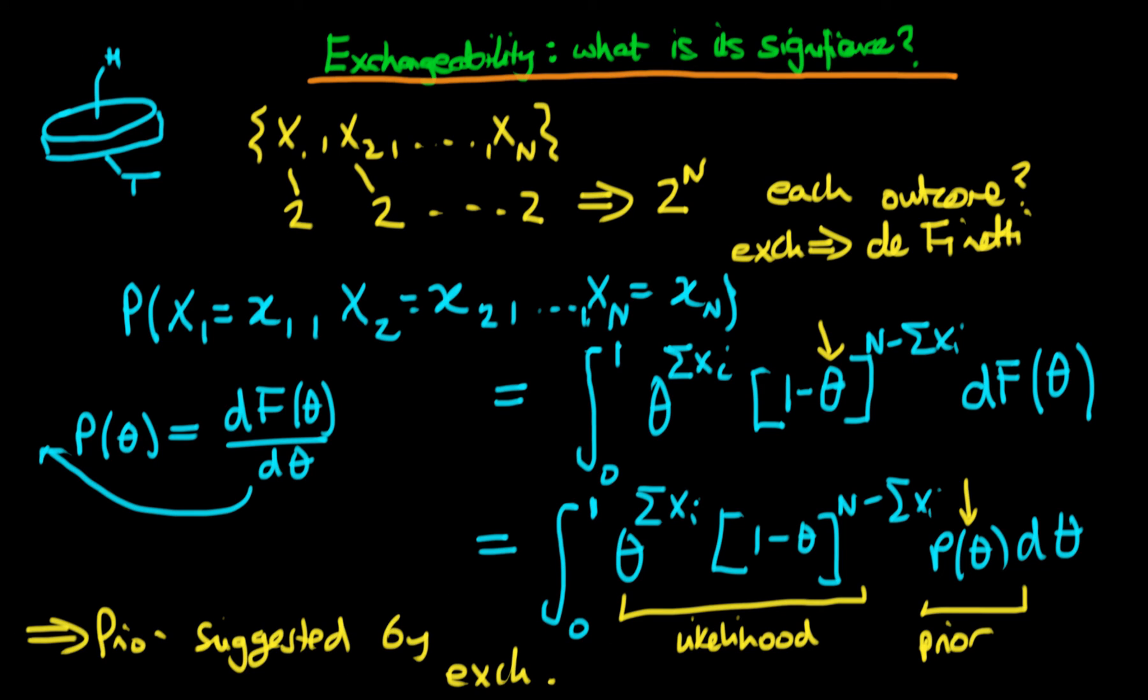Then essentially you're not really that happy with the concept of a sequence of data being exchangeable. That seems a lot more palatable to me than just thinking about a prior on its own, but it turns out you can think about them in a very similar and analogous fashion.